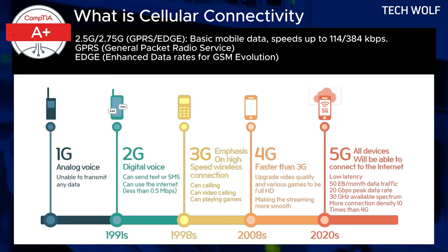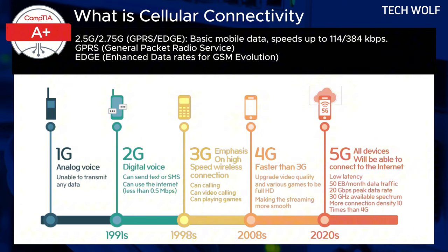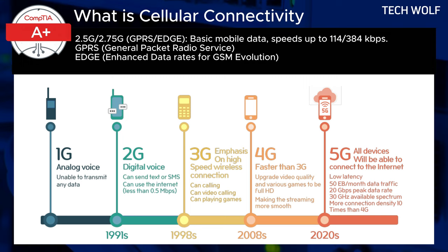2.5G and 2.75G — GPRS and EDGE: as demand for mobile data grew, enhanced versions of 2G were developed. GPRS (General Packet Radio Service) and EDGE (Enhanced Data Rates for GSM Evolution) were introduced, providing moderate improvements in data transmission. 2.5G GPRS was released in the late 1990s with data speeds of up to 114 kilobits per second, enabling basic internet access and MMS multimedia messaging. 2.75G or EDGE was released in the early 2000s and brought speeds up to 384 kilobits per second, making web browsing and downloading possible, though still quite slow by modern standards.